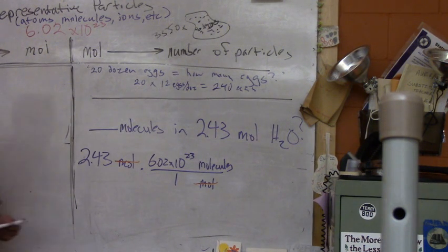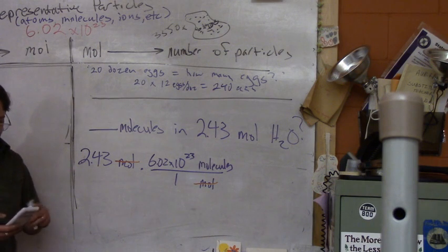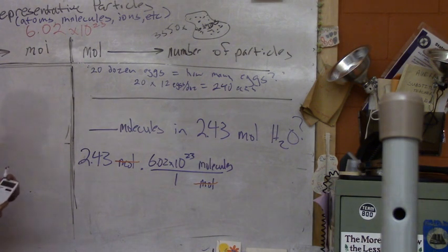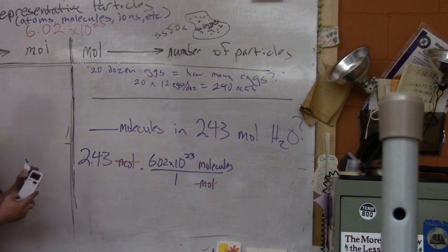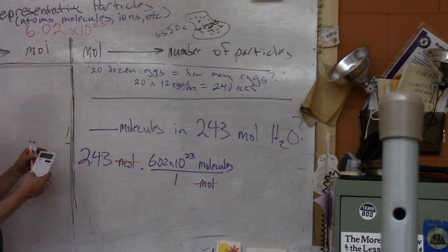It's complicated by the scientific notation aspect, but those of you watching at home: 2.43 times - reminder of how we do this on our calculators or on the Chrome calculator - times 6.02, exponent button, 23.